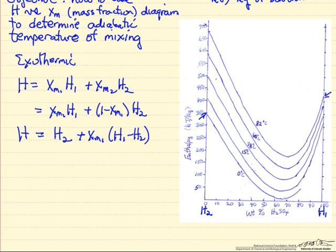For example, if we were to start at 38 degrees, here's pure component 2, here's pure component 1. What we would expect then is for any mixture, the enthalpy is somewhere along this line. If we made a 50-50 mixture, the enthalpy would be here.